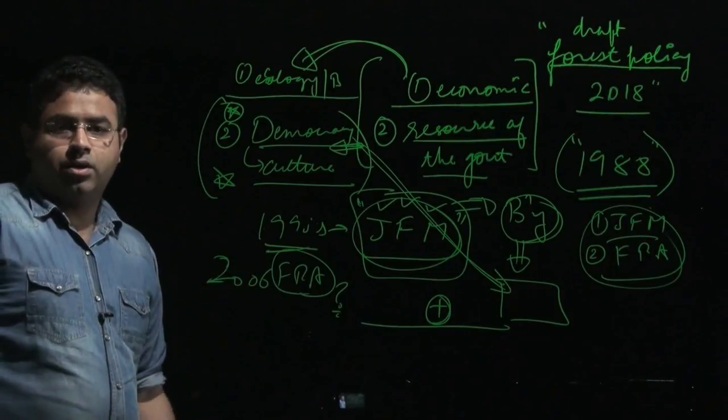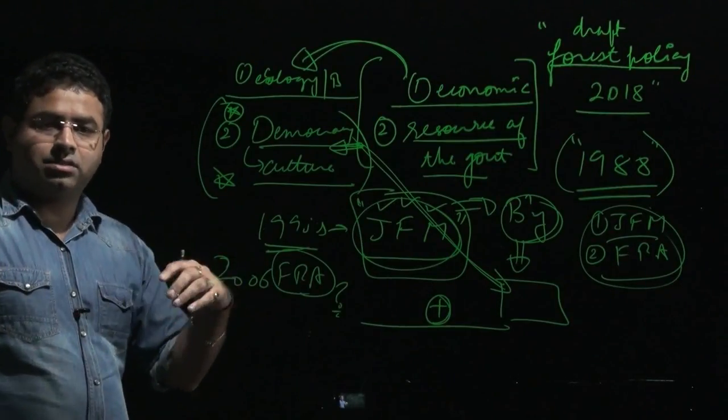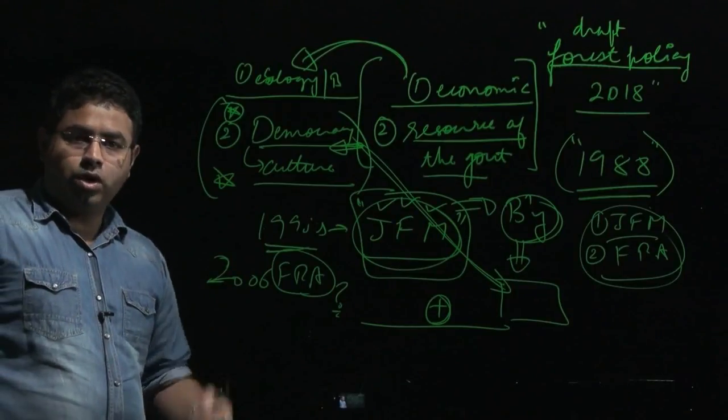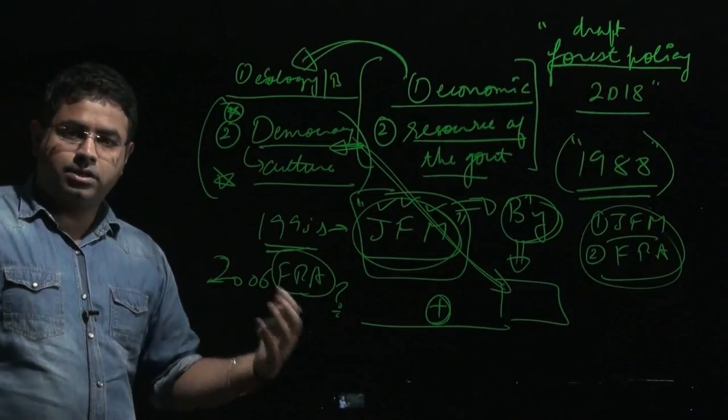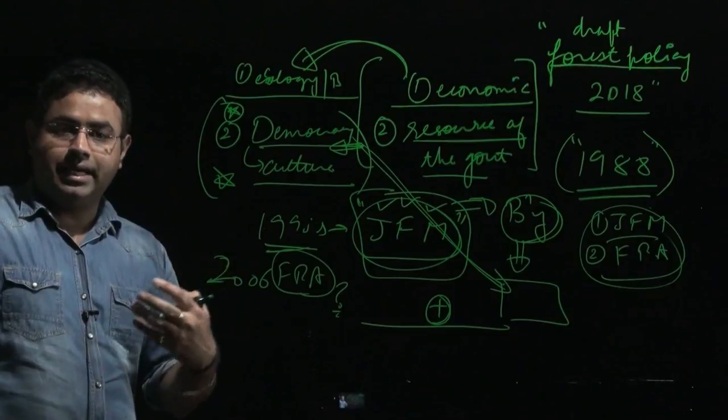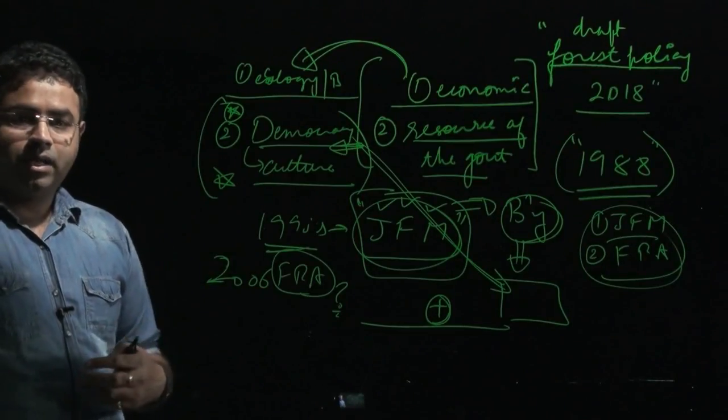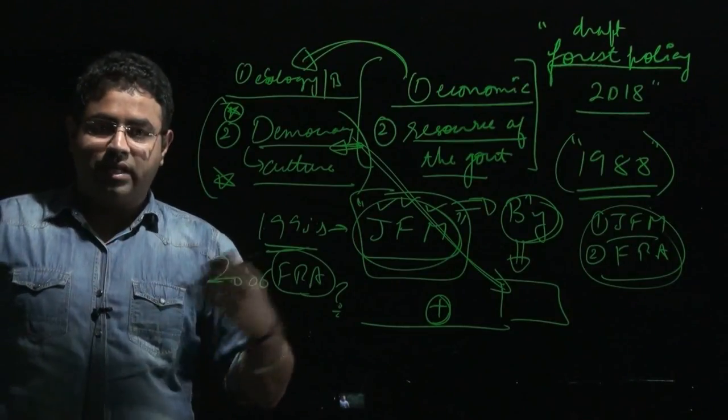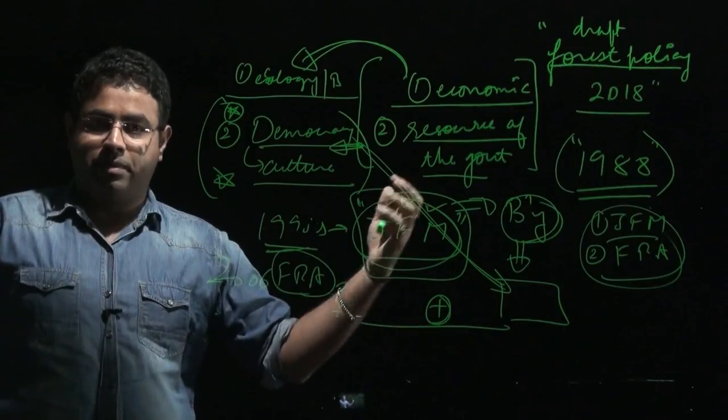As per the Forest Rights Act, the dwellers living there will run their own administrative system, and their gram sabha will basically decide whether to divert forest land for some other purpose or not.